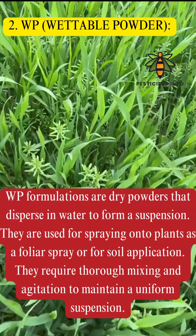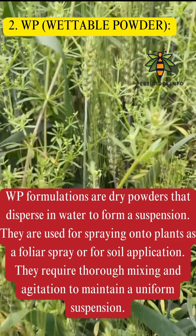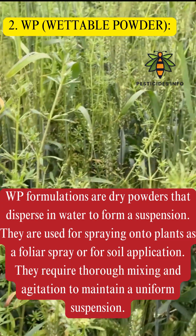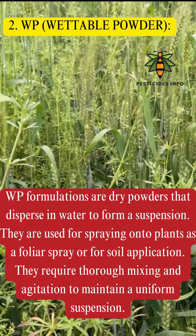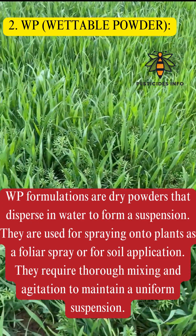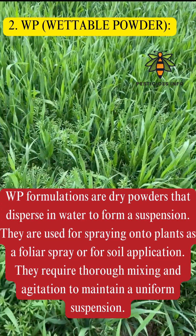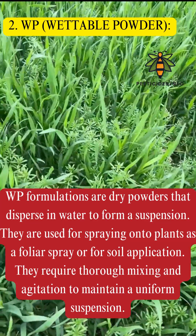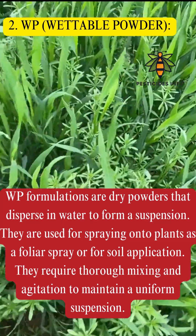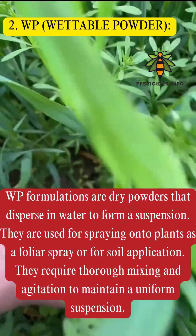2. WP — Wettable Powder. WP formulations are dry powders that disperse in water to form a suspension. They are used for spraying onto plants as a foliar spray or for soil application. They require thorough mixing and agitation to maintain a uniform suspension.